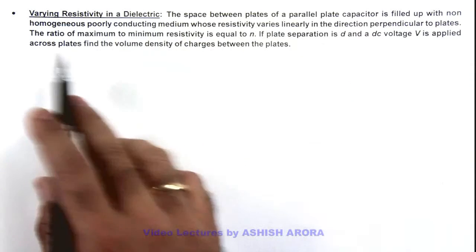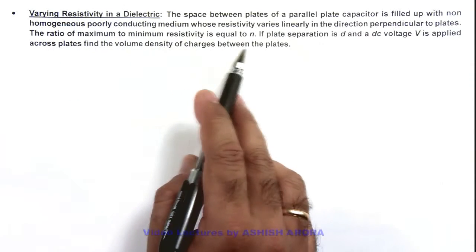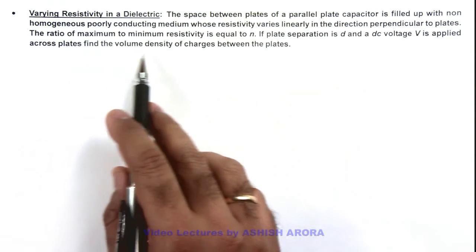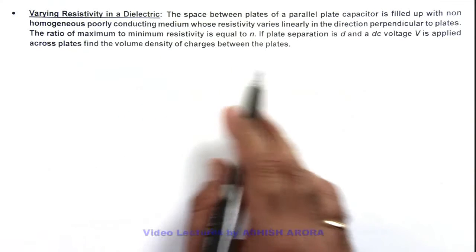We are given that the ratio of maximum to minimum resistivity is n. And if plate separation is d and a voltage V is applied across plates, we are required to find the volume density of charges between the plates.